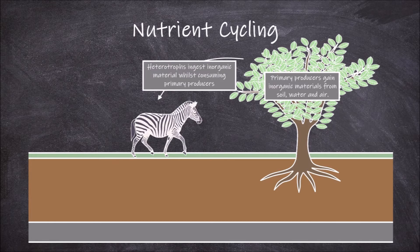Heterotrophs, also known as consumers, then ingest these organic molecules as they consume the plants or other primary producers, or as they consume animals who themselves have eaten the primary producers.